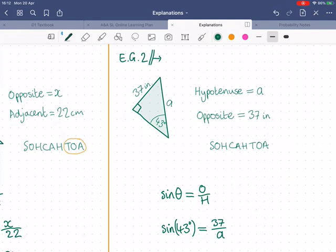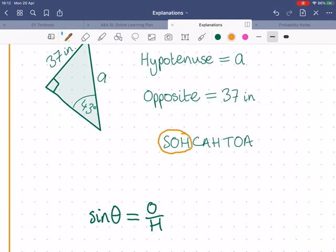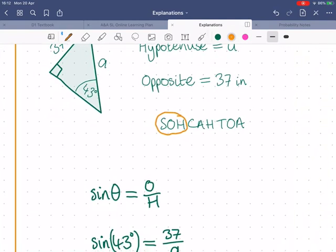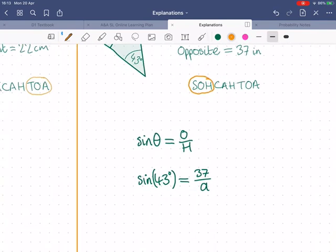Again, identify first. A is our opposite, and A is our hypotenuse, sorry. 37 inches is our opposite. Now which one out of SOHCAHTOA are we working with? O and H, so this first part here, sine of the angle equals opposite over hypotenuse. So we fill in everything we know, sine of 43 equals 37 over A. Now we need to just finish this off. So we ask our calculator what sine of 43 is, what should this ratio equal? And it'll tell us 0.682, roughly.